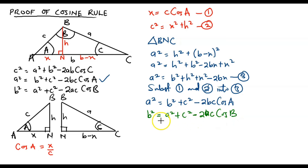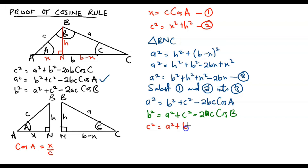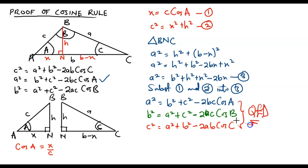Similarly, writing the cosine rule for side c: c squared equals the other two sides, a squared plus b squared, minus two times a and b, then cos of the angle of the side you don't know, which is capital C. Hence, this is quite easily done — that is the cosine rule and its proof.